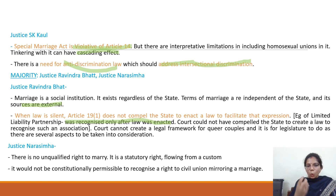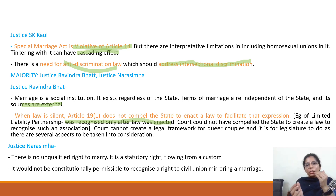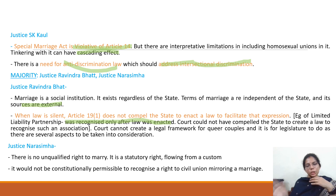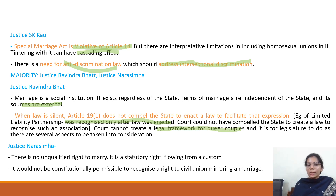He also gave the example that when you don't have a right to transport, you cannot order the construction of roads. A similar analogy was created — since there is no right to enter into any such relationship or union, how can a right be provided under Article 19(1)? That right cannot and should not be read under Article 19(1). The court could not compel the state to create a law to recognize any such association; it cannot create a legal framework for queer couples — it is for the legislature to do, as there are several aspects which have to be taken into consideration.